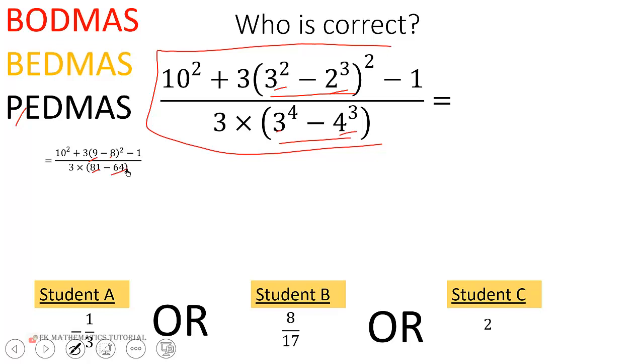So you continue to simplify the parentheses. 9 minus 8 is 1, 81 minus 64 is 17, and now you can tell me the exponent.